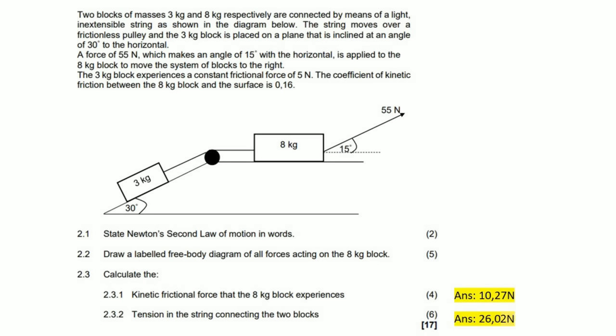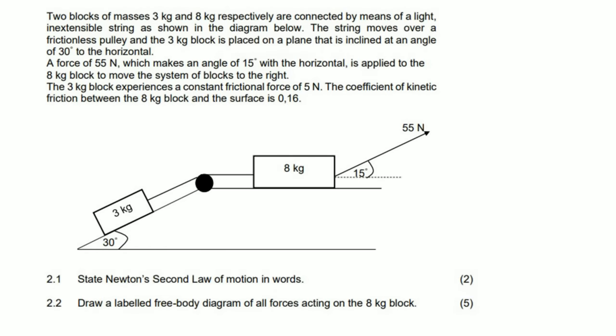Here are all the questions we are going to tackle in this video. We are given two blocks connected by a rope. Pretty much all the information is on the diagram. There's a force of 55 Newtons. The three kilogram block experiences a frictional force of five Newtons, and the coefficient of kinetic friction for the eight kilogram is 0.16. We need to make sure we don't forget that.